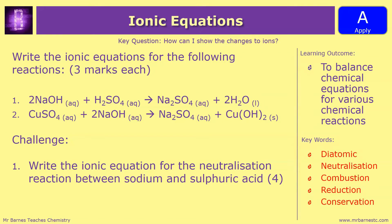Let's have a look at a couple of questions. You've got two easier ones and one challenge question. The easier ones are: write the ionic equation for sodium hydroxide reacting with sulfuric acid to make sodium sulfate and water; and copper sulfate reacting with sodium hydroxide to make sodium sulfate and copper hydroxide. Remember, you only separate out aqueous species — not liquid, solid or gas. Once you've done those, have a go at the challenge one if you're confident at writing balanced equations from word equations. Pause the video and have a go.